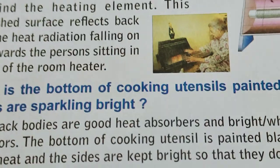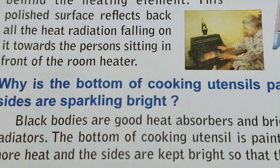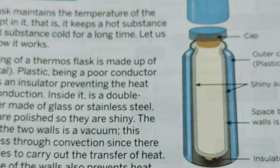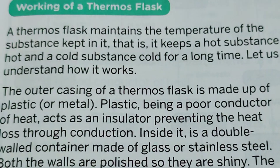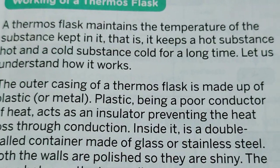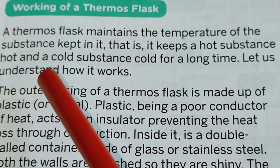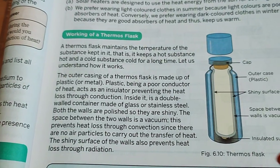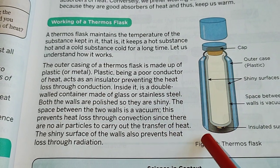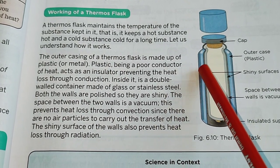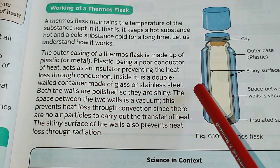We have completed the topic of radiation of heat. Now we will read about the working of a thermos flask. A thermos flask is a very important utility material, especially during winter, because it maintains the temperature of the substance kept in it — keeping a hot substance hot and a cold substance cold for a long time. The outer casing of a thermos flask is made of plastic or metal. Plastic, being a poor conductor of heat, acts as an insulator, preventing heat loss through conduction.